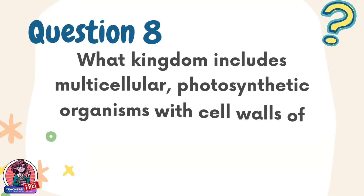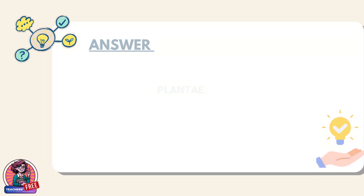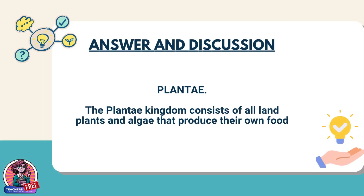Question 8. What kingdom includes multicellular, photosynthetic organisms with cell walls of cellulose? Answer: Plantae. The Plantae kingdom consists of all land plants and algae that produce their own food.